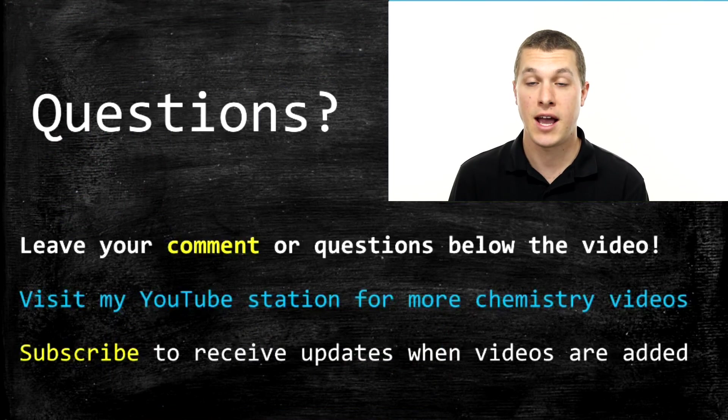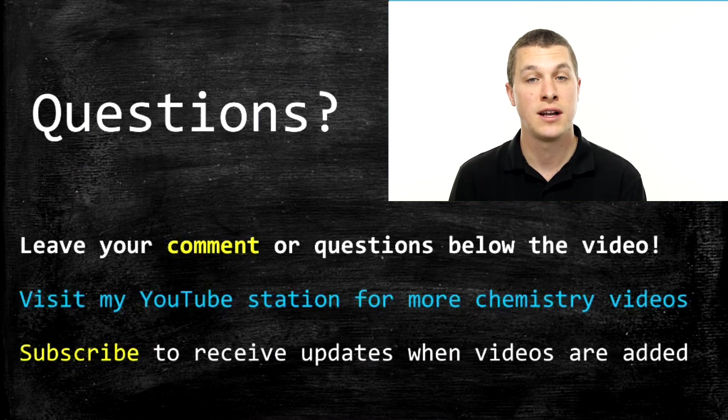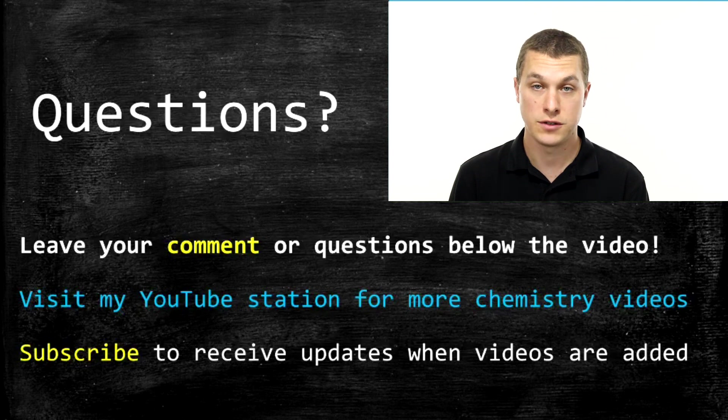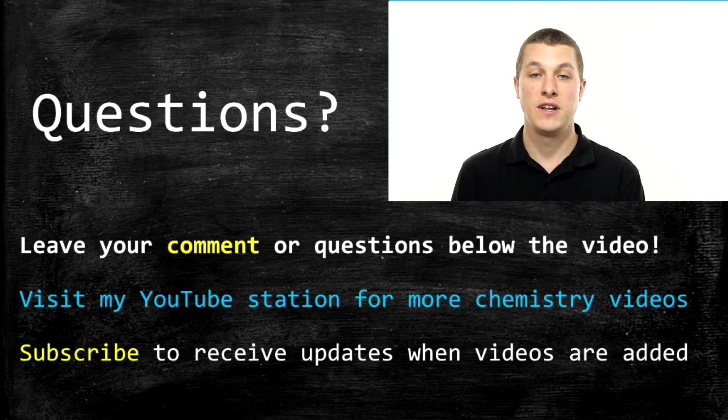All right, so that is acid-base reactions. When you combine an acid and a base, you always get out water and an ionic compound. The main challenge is making sure that ionic compound is balanced in terms of its charges, and then balancing the chemical reaction. If you have any questions, please leave them below. Please subscribe to get updates about future videos, or visit my channel to see other chemistry videos.